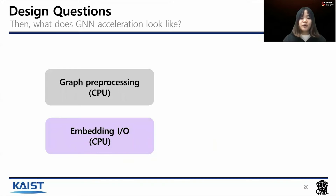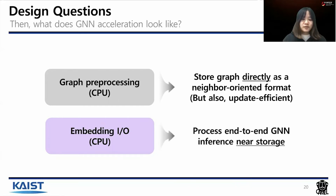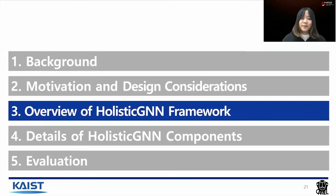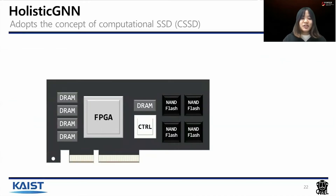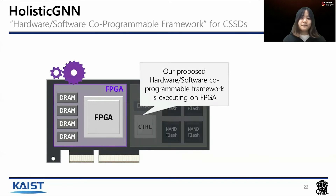What do we need to do for a new GNN acceleration system? First, we suggest storing the graph directly in a neighbor-oriented format that is also update-efficient. Second, we suggest processing end-to-end GNN inference near storage. Based on these design considerations, we propose a new GNN acceleration framework called Holistic GNN. Holistic GNN adopts the concept of computational SSD, and unlike conventional in-storage processing, it decouples the compute unit from the storage resources. We implement the Holistic GNN framework on an FPGA.